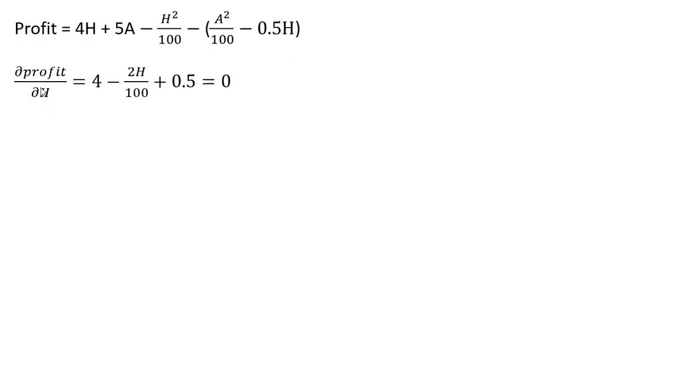Our first step is to take a partial derivative of the profit function with respect to H or honey. Doing that, the partial derivative of 4H is 4. On this H squared term, we're going to bring down 2H in front, and then 2 minus 1 in the exponent leaves H raised to the power of 1. Finally, this minus times minus gives us 0.5H, and the derivative of 0.5H is just 0.5.